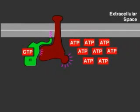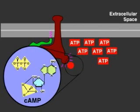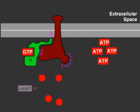Activated adenyl cyclase converts ATP to cyclic AMP, which then acts as a second messenger that relays the signal from the G protein-coupled receptor to other components in the cell.